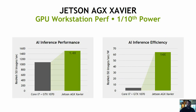With Jetson AGX Xavier, we're delivering more performance and 10 times the power efficiency compared to a GPU workstation, and obviously the Jetson is much smaller and more deployable. These benchmarks show ResNet-50 image recognition performance, and we'll dig into more deep learning benchmark results a bit later.